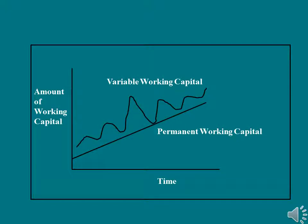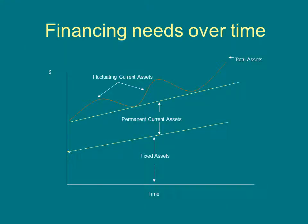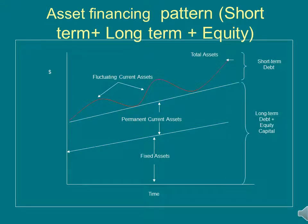Regarding the relation between time and working capital: permanent working capital increases as sales increase, while variable working capital falls within a certain range as sales increase. The asset financing pattern dictates that permanent current assets and fixed assets are financed by long-term debt and equity, while fluctuating current assets are financed by short-term debt.